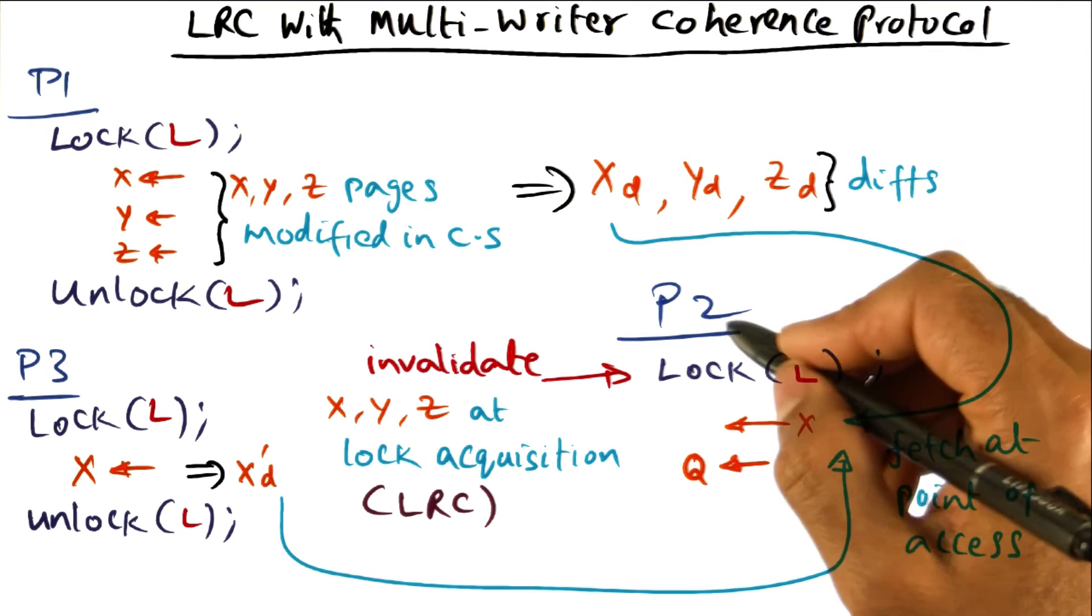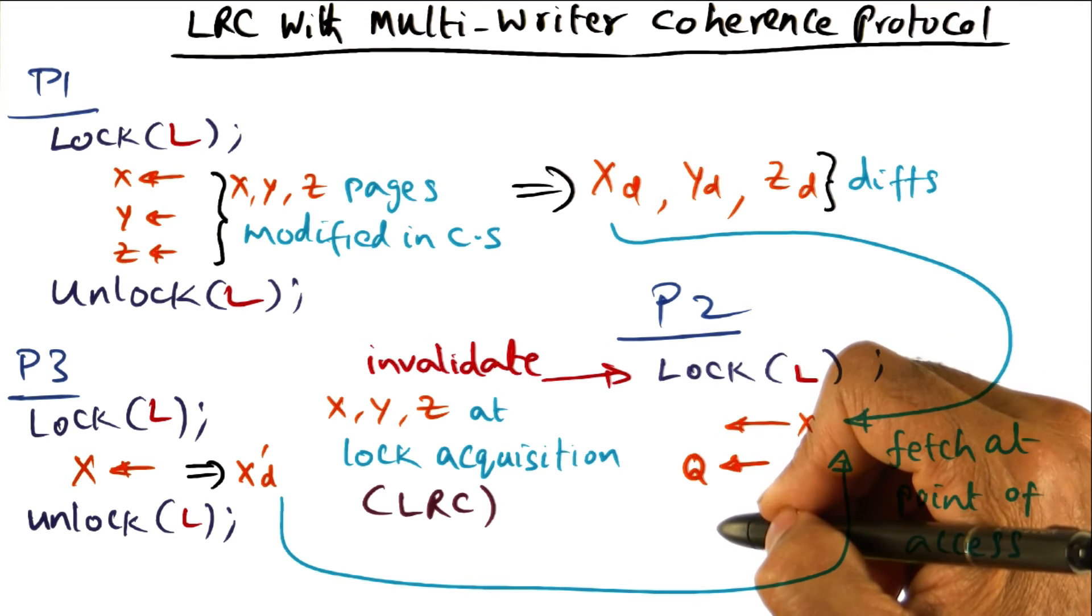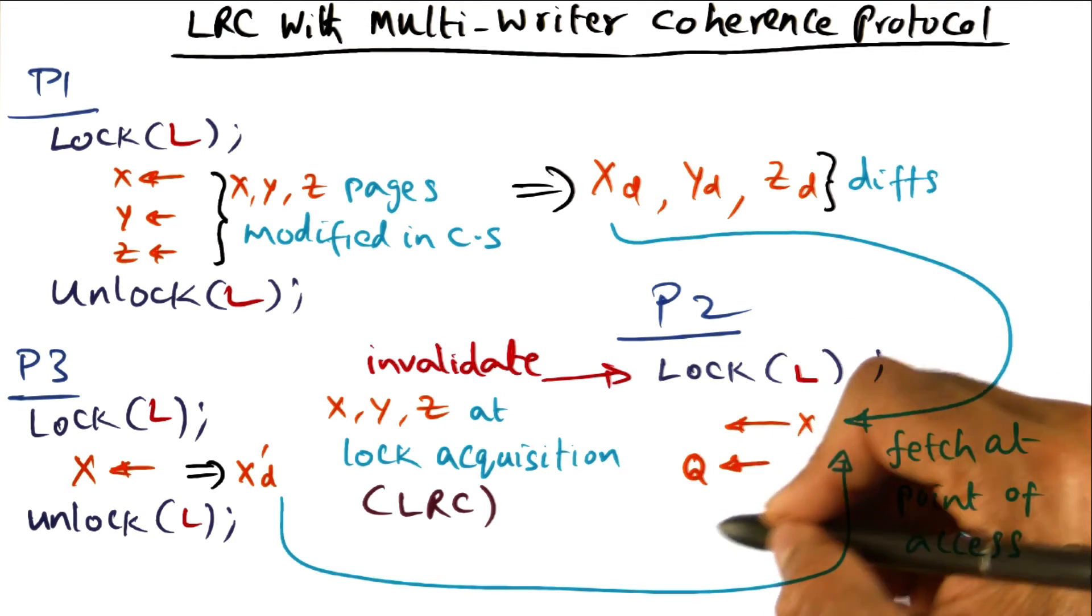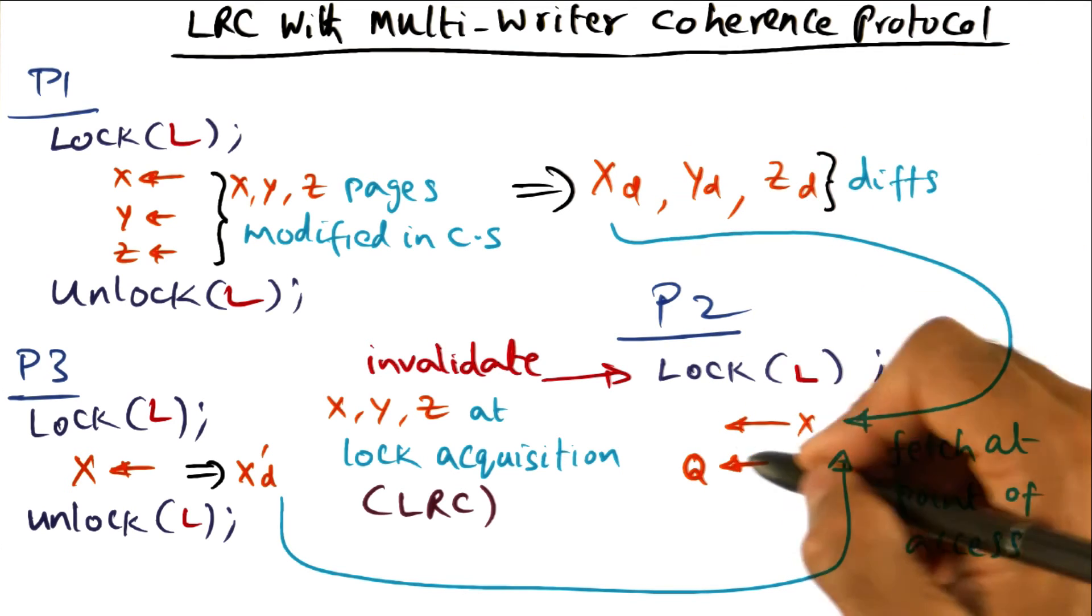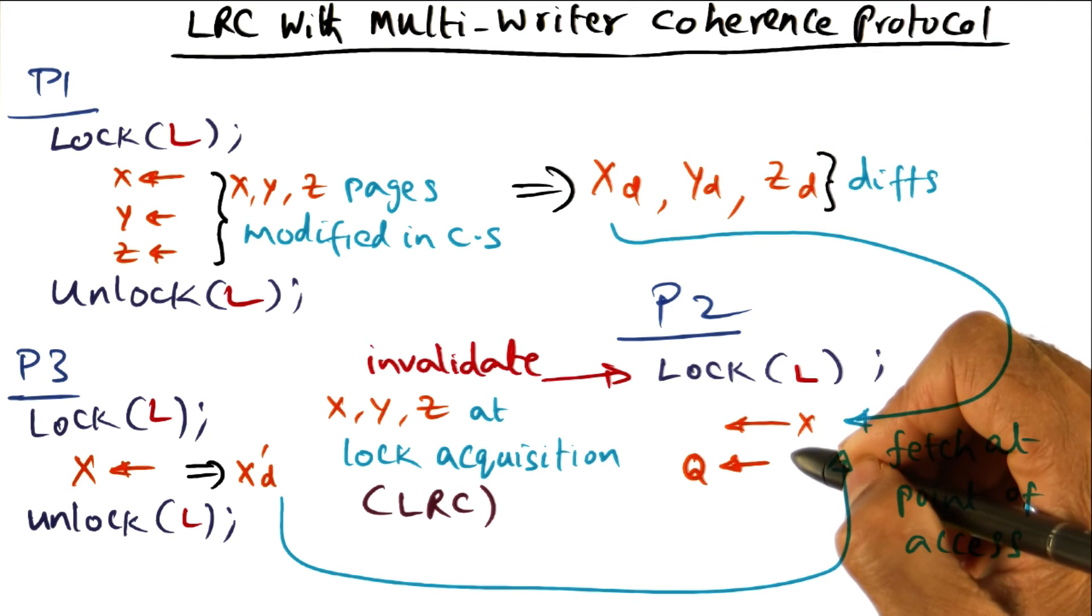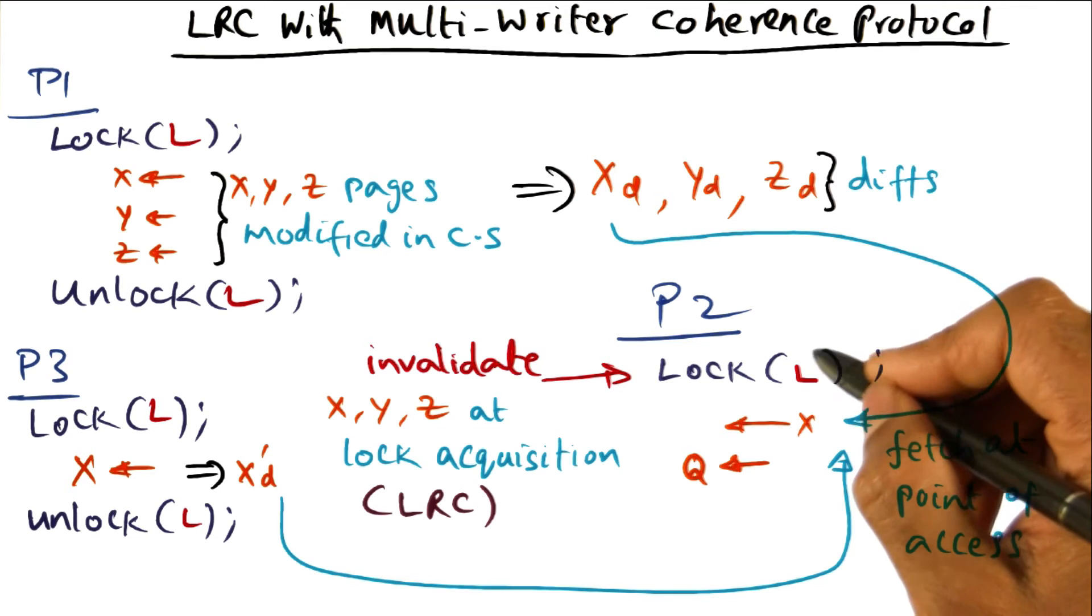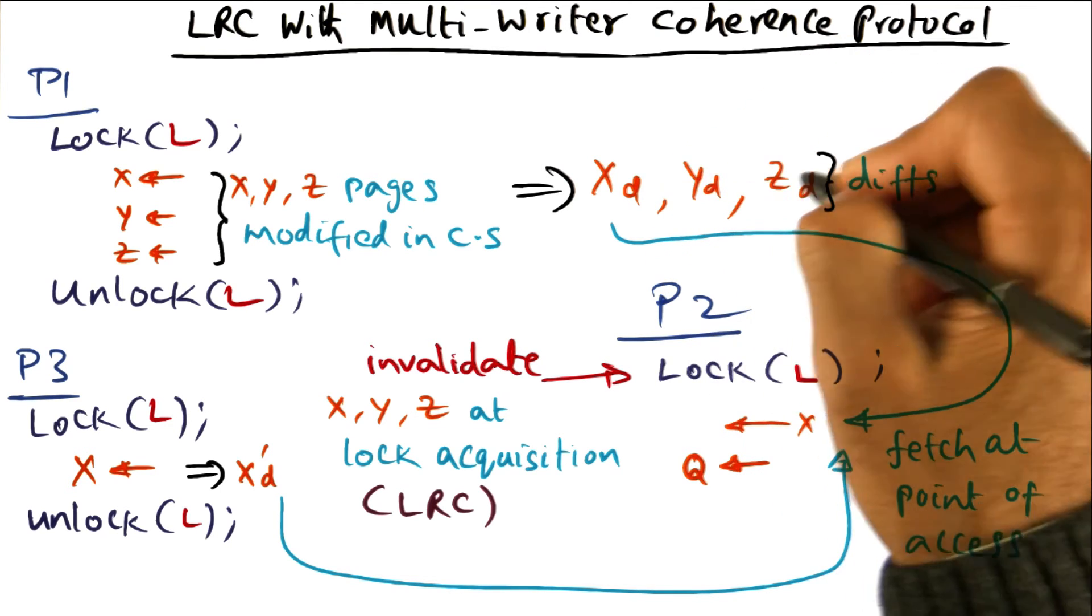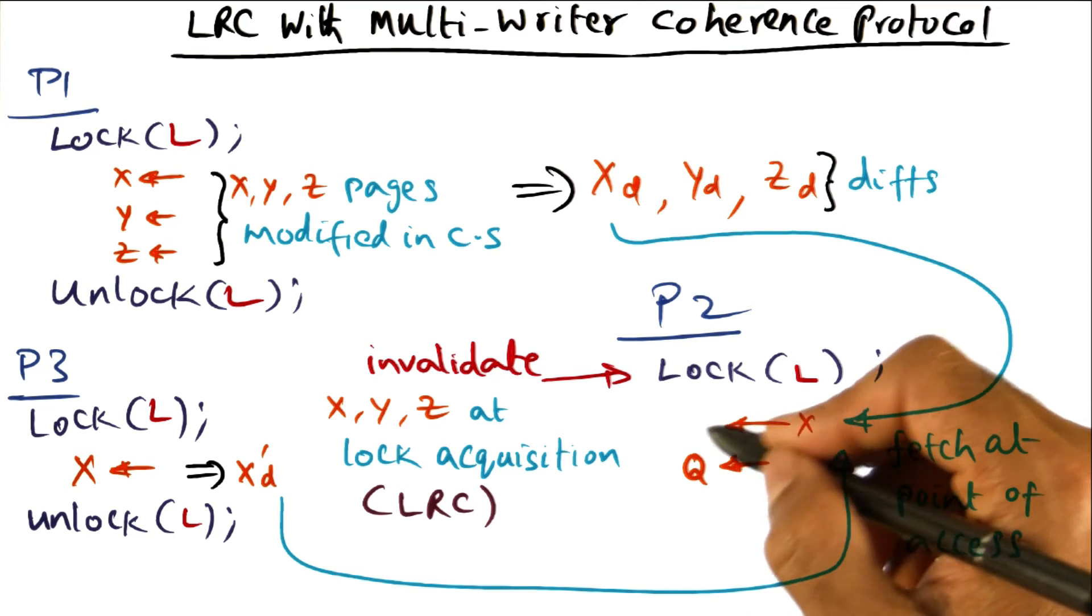On the other hand, it is possible that P2, as part of its execution of its critical section, modifies another page Q, different from x, y and z. So now, the DSM software knows that this particular lock is associated not just with x, y and z, but it is also associated with Q.